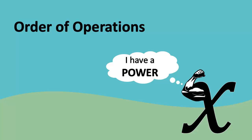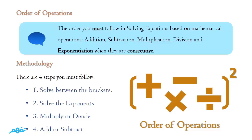Hello, my dear colleagues. This is a new algebra lesson on order of operations. In this lesson, we will learn how to order our operations — what to do first and what to do last: multiplication, division, addition, subtraction, solving within brackets, and exponentiation. The order of operations is the order you must follow when solving equations based on mathematical operations like addition, subtraction, multiplication, division, and exponentiation — which includes powering, squaring, cubing, and so on.